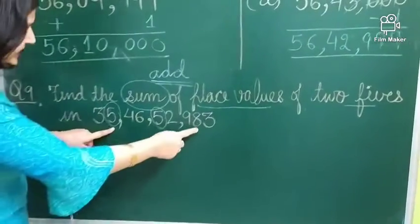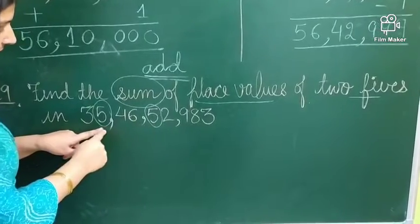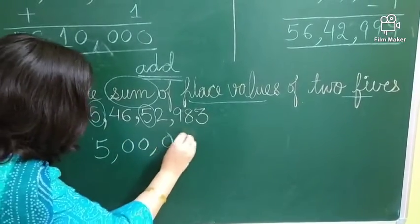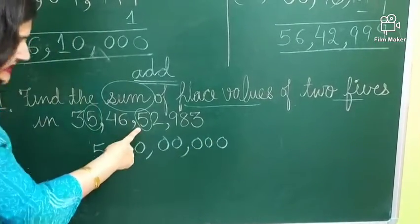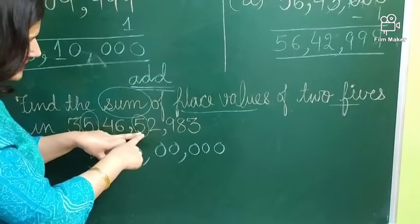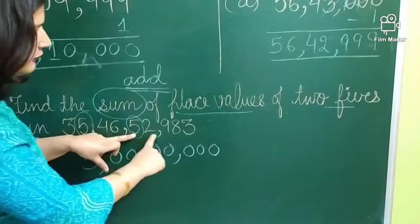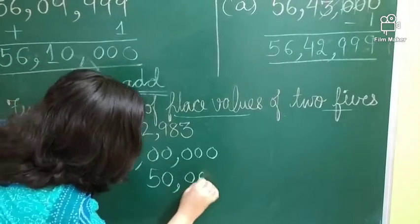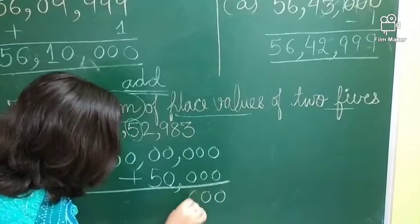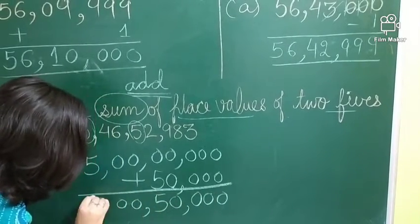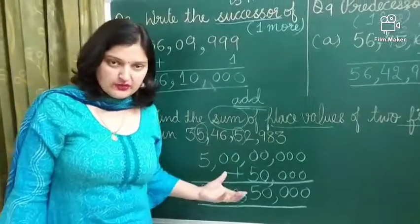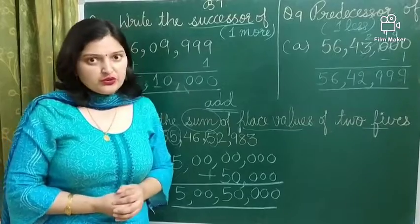उनकी place values को add करना है. So, what is the place value of this 5? So, check its place first. Once 1000 lakh करो. So, 1 करो. So, place value of 5 is 5 करो. Now, next 5. What is next 5? Once 1000. So, its place is 1000, 10,000. So, the place value of this 5 is 50,000. So, arrange this number below the previous number and then we have to add. And after adding these numbers, we get our answer. And that is 5 करोर, 50,000. So, in this way you can solve any such type of questions. So, with this we have completed our first unit. Thank you. Thank you.